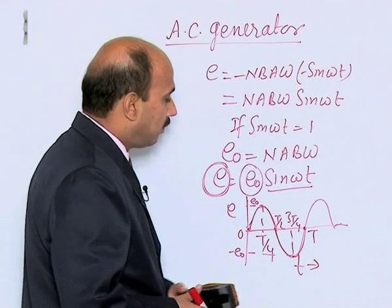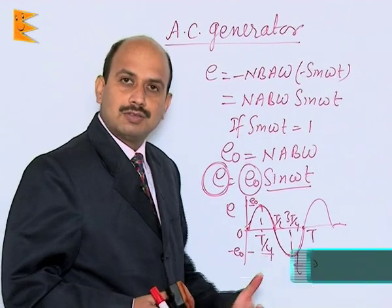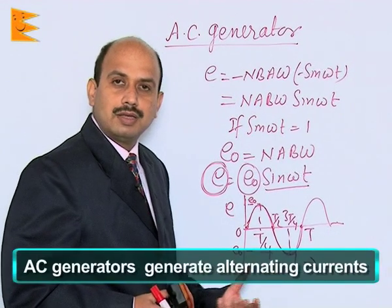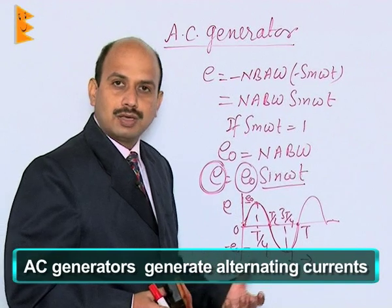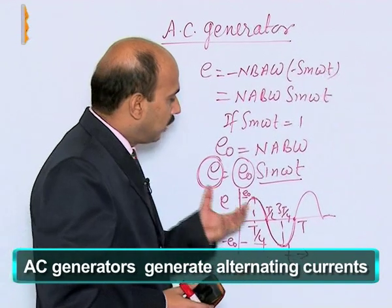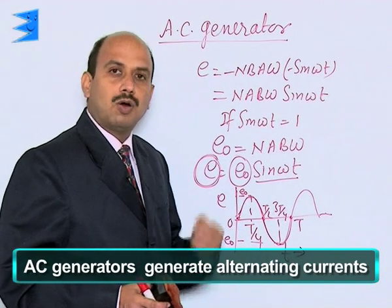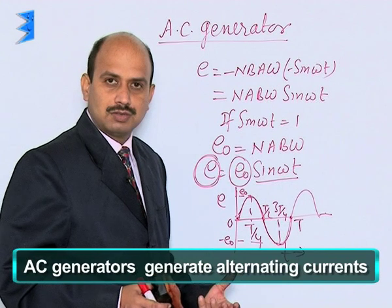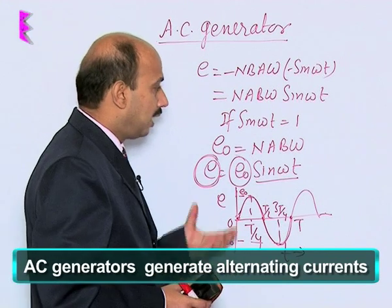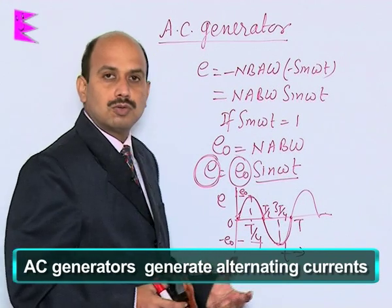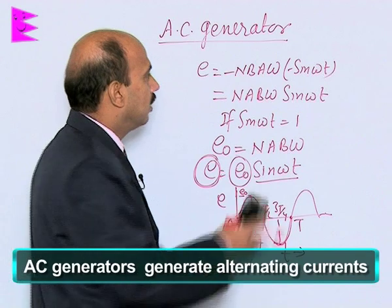The direction of the induced EMF and current keeps on changing periodically. That is why this EMF is known as alternating EMF or alternating voltage, and the current induced is known as alternating current.